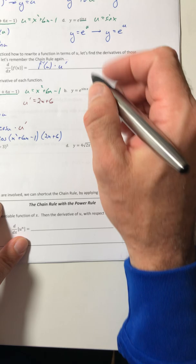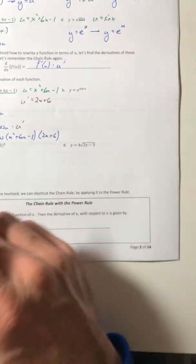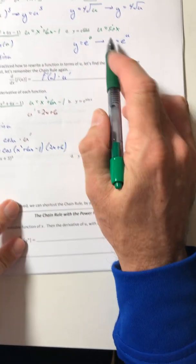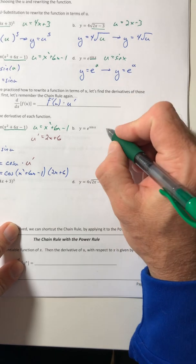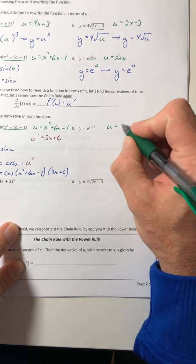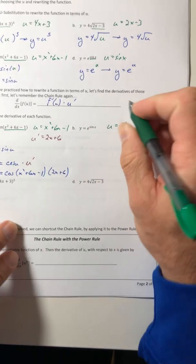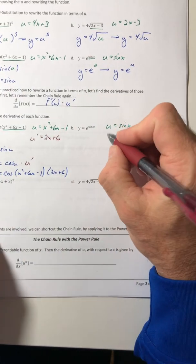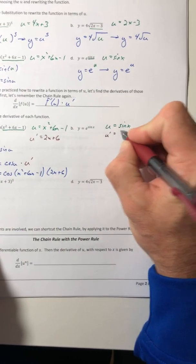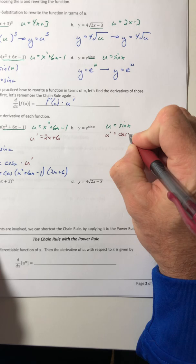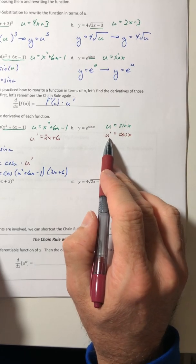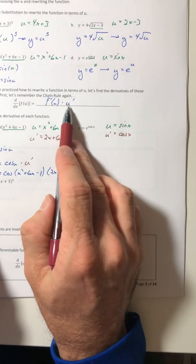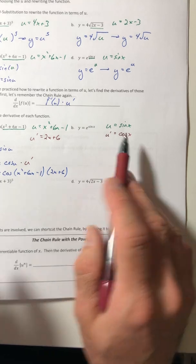All right. Part b. y equals e to the sine of x. So I am going to choose the same thing as I did before for the u. Well, now that I want the derivative, I'm going to need u prime because that's in the formula. So u prime is cosine of x.